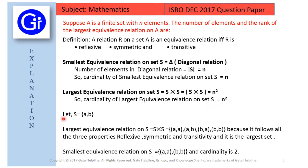We will see this with the help of an example. Let S = {A, B}, meaning set S has two elements A and B. The largest equivalence relation on S becomes S cross S, which gives us the pairs: (A,A), (A,B), (B,A) and (B,B). It follows all three properties — reflexive, symmetric and transitive — and it is the largest set. For the smallest equivalence relation on S it will be {(A,A), (B,B)}, and the cardinality here will be 2, which equals n.